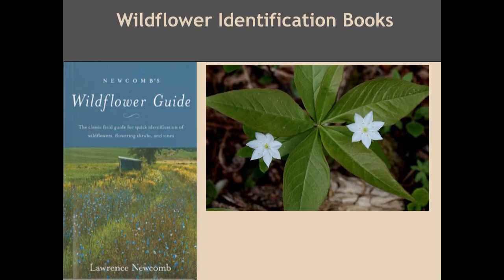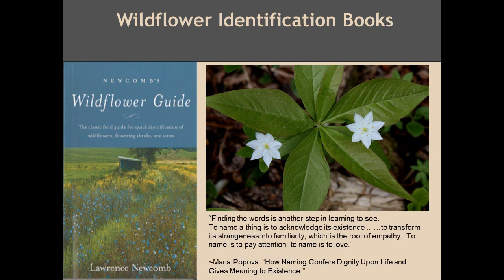Now that you have a basic understanding of what characteristics to look for when identifying an unknown flower, and how to use the Newcomb's Wildflower Guide to identify it, you can go out and practice. If you don't have the book, you can order it online or find it at a local bookstore. Practice with the flowers that you already know, and then expand to new ones. Closely observe the type of flower, the arrangement of leaves, and the leaf margin. Taking the time to observe will open the door to new discoveries, such as the unique pollinators or caterpillars that have a relationship with a specific plant species. Maria Popovic shares that finding the words is another step in learning to see: to name a thing is to acknowledge its existence, to transform its strangeness into familiarity, which is the root of empathy. To name is to pay attention. To name is to love. Thank you for tuning in today, and enjoy your adventure outdoors.